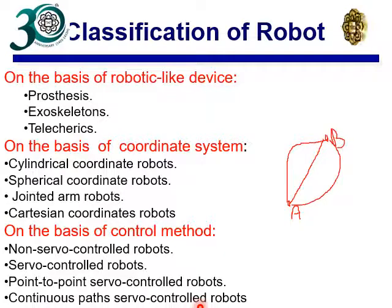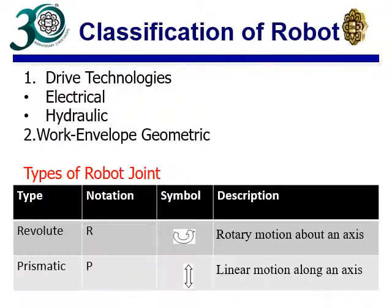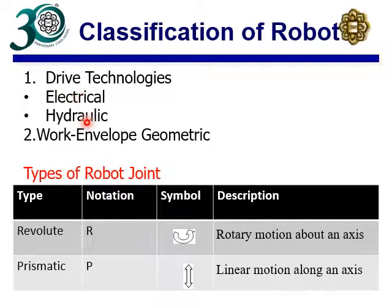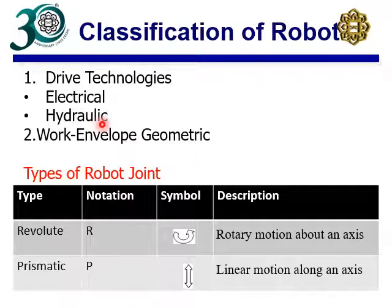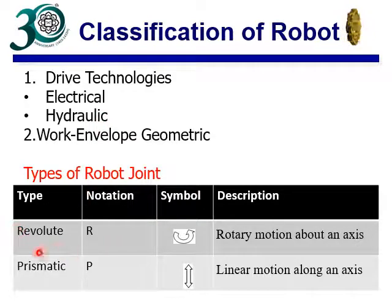Based on drive technology, you can have electrical or hydraulic systems. Hydraulic systems generally have high payload capacity, while electrical systems are easier to integrate with no risk of oil slippage. Hydraulic robots are usually very bulky in nature.